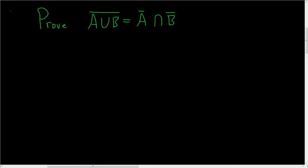Prove that the complement of A union B is the complement of A intersected with the complement of B. The line above the sets means complement. This is one of De Morgan's laws. We'll just do a really, really quick proof.